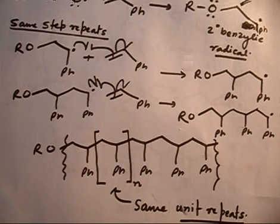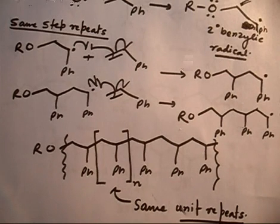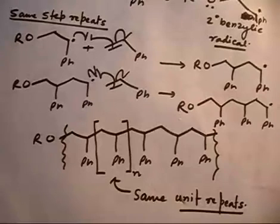We have discussed two kinds of polymerization: cationic polymerization and free radical polymerization. Basically there is something called anionic polymerization that also happens. We'll discuss some reactions of anionic polymerization.